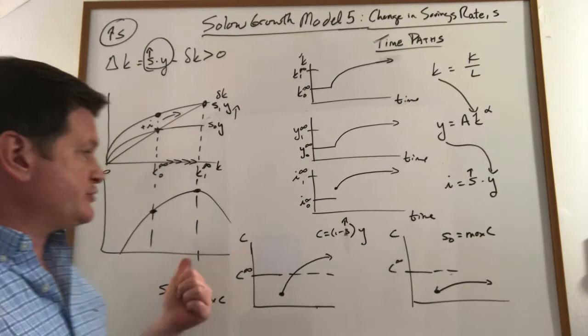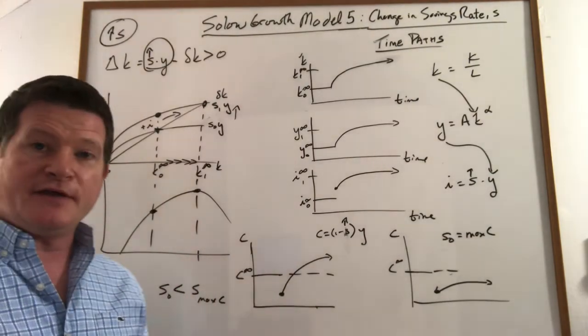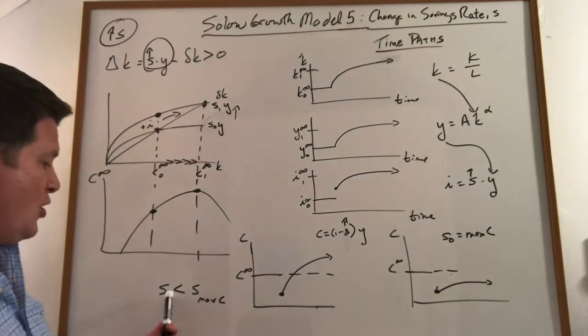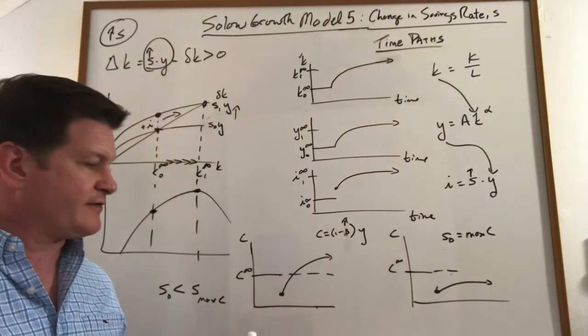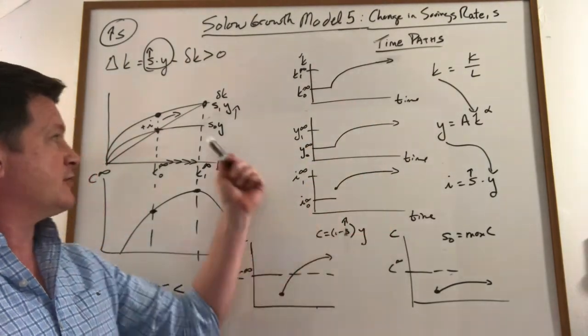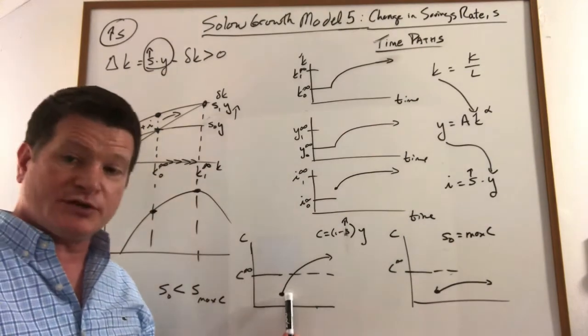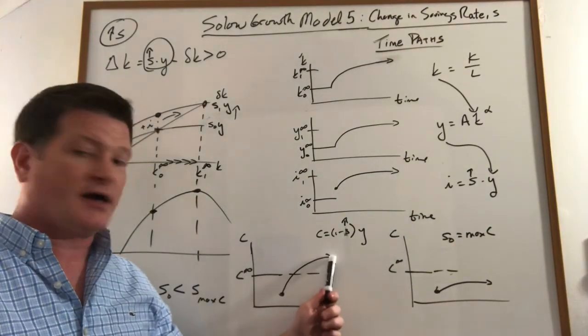So it all depends on where you started. If the initial savings rate is below the maximum consumption savings rate, everything looks like this. The graph looks like that and consumption drops and then grows beyond where it was.